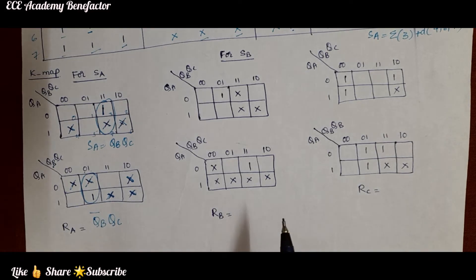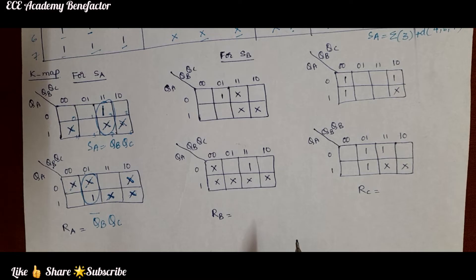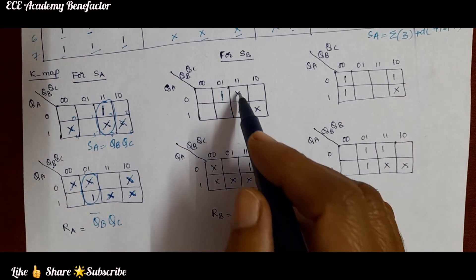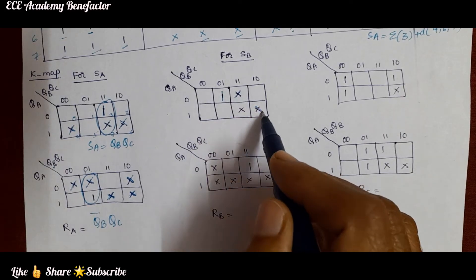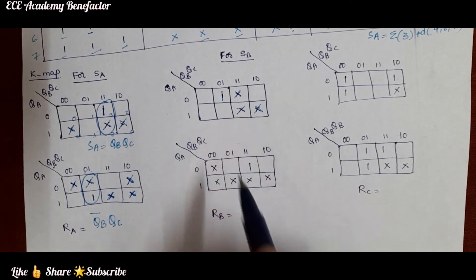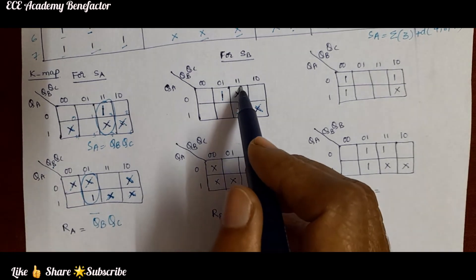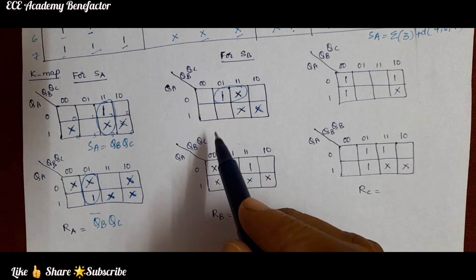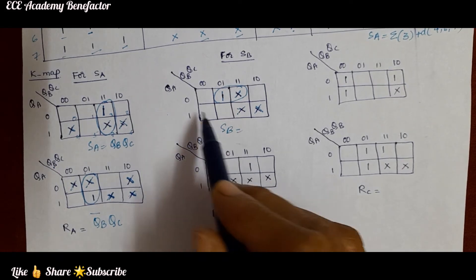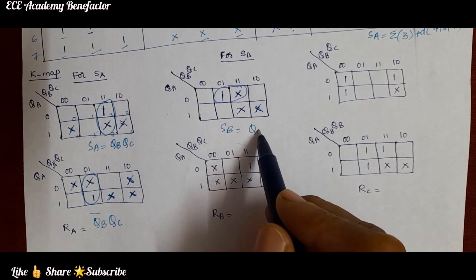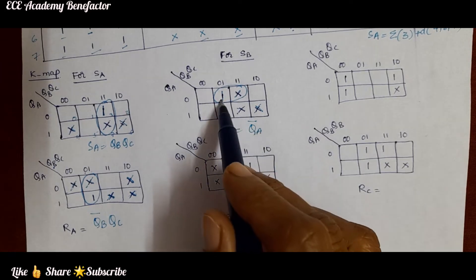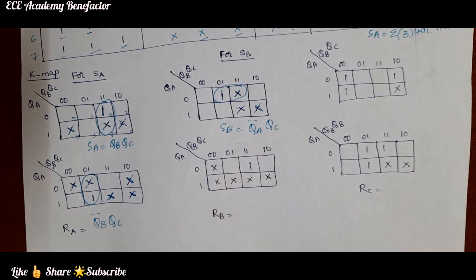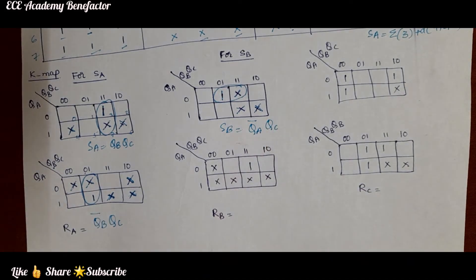Next we simplify for SB. SB is 1 at state 1 and do not care at states 3, 6, and 7. One pairing is possible, and SB simplifies to Q̄A·QC.